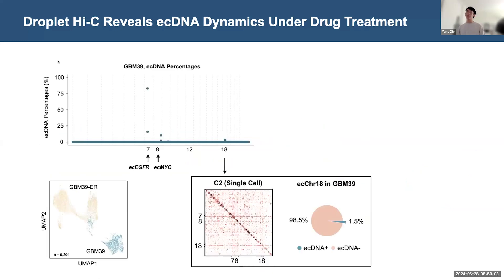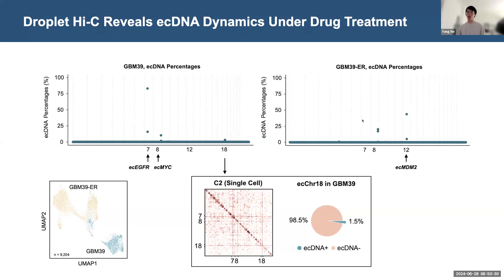By using our ecDNA classifier, we first identify the EGFR ecDNA in the majority of cells before treatment, which serves as ground truth. We also identify a small number of cells with ecDNA carrying the MYC gene, and we find a rare ecDNA on chromosome 18, although we didn't find any known oncogenes on these ecDNAs. After treatment, the EGFR ecDNA is totally gone. The proportion of MYC ecDNA increases, and we noticed a new ecDNA on chromosome 12 containing MDM2, which has never been reported before.